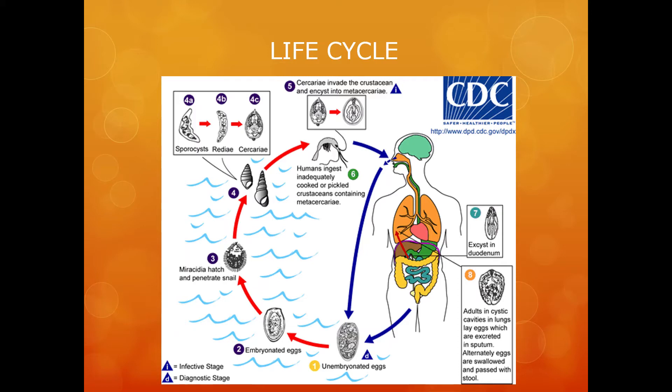Worms can also reach other organs or tissues such as the brain or striated muscles. Infections may persist in humans for 20 years, and animals such as pigs, dogs, and a variety of feline species can also harbour Paragonimus westermani.